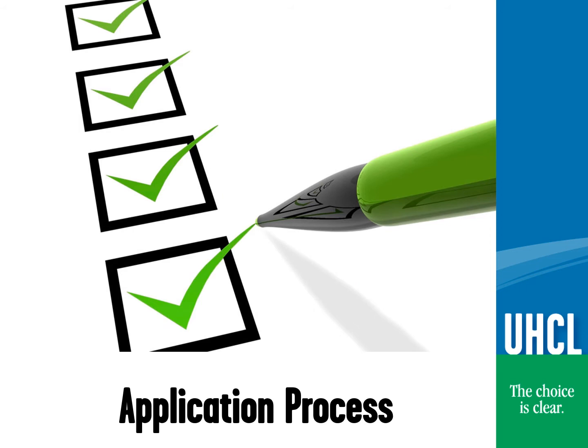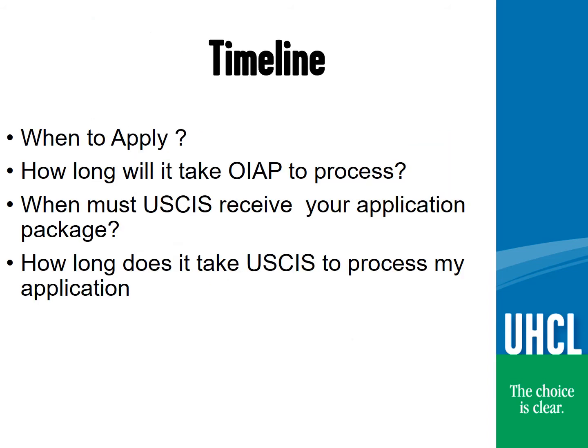We will briefly go over the application process when first applying for the OPT STEM extension. You can apply up to 90 days before your post-completion OPT ends. You must be in an approved post-completion OPT period to be eligible. Generally, OIAP can take 7 to 10 business days to process a complete submission. At peak times, this may be longer. We process on a first-come, first-served basis and will be unable to expedite an application. Please be sure to plan ahead.